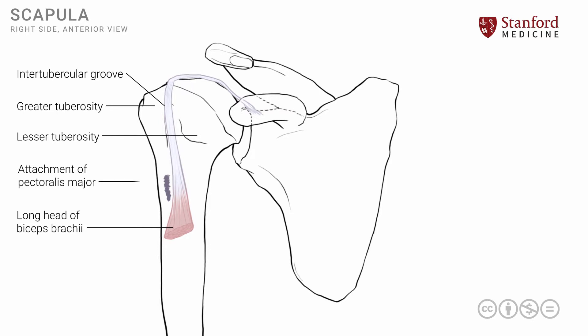A second muscle is known as the teres major. This muscle has fibers that extend from the scapula and run in an outward and upward direction, attaching to the medial part of the anterior humerus, medial to the long head of the biceps.